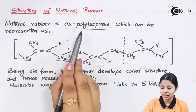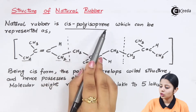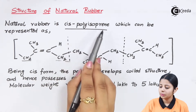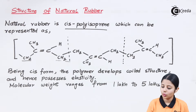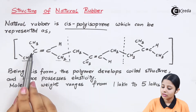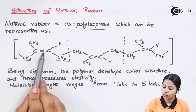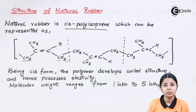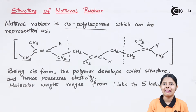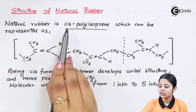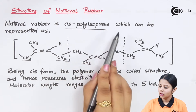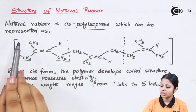Polyisoprene: 'poly' means many, and 'isoprene' is used because we get an iso-structure here. The C=C is present, and the CH3 and CH2 give it an iso-look. That is the reason why it is called cis polyisoprene, which can be represented as the entire structure of rubber.